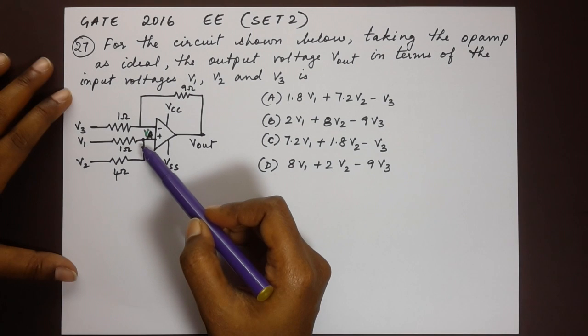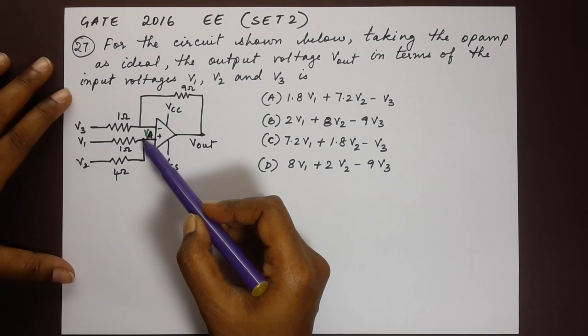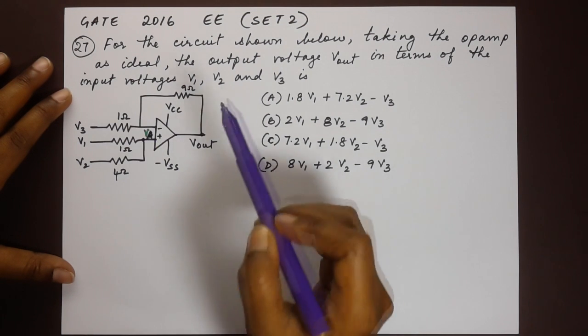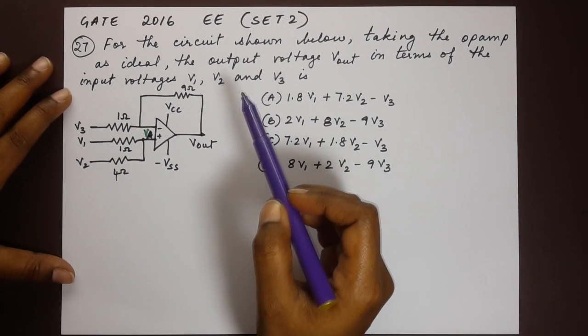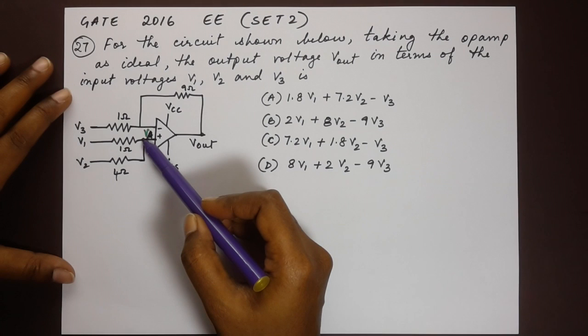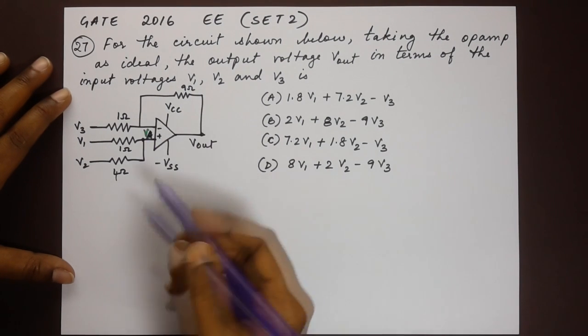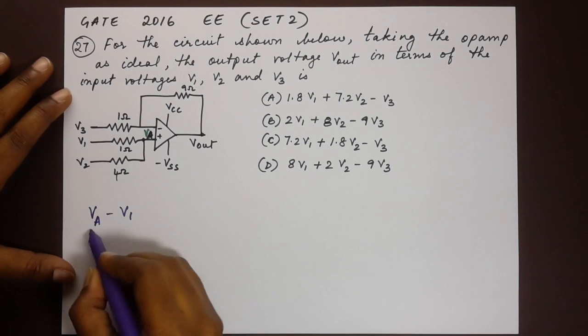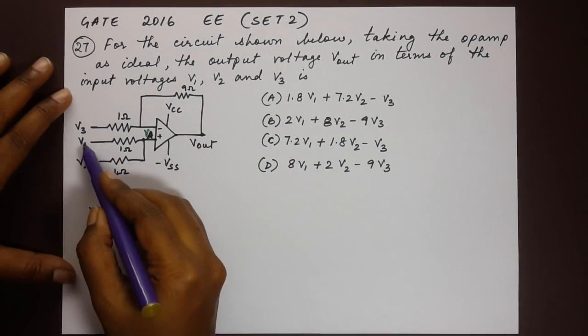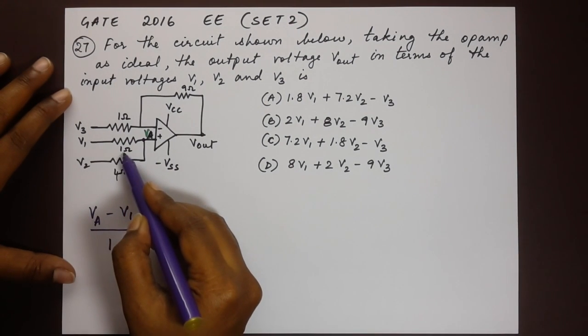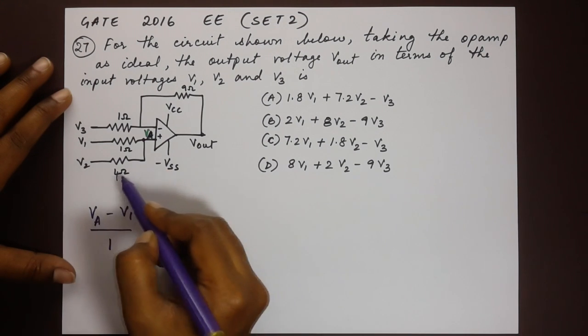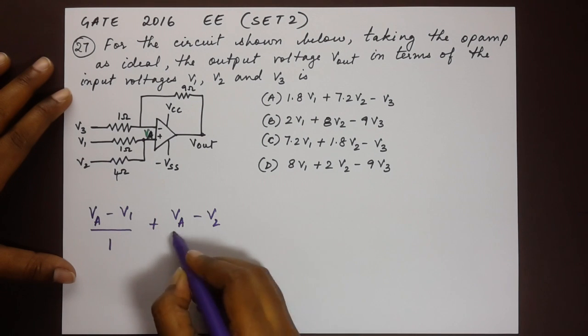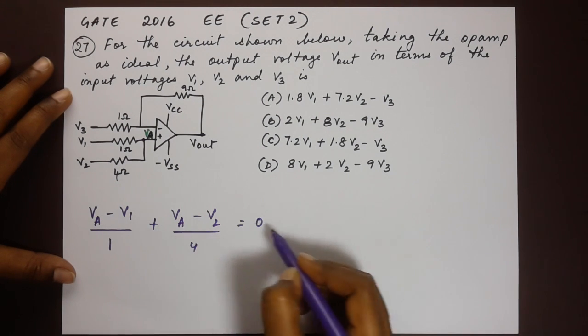In order to write down the different equations, I have taken this point here and named it as Va. The first thing we will do is use KCL and write down the equation at this node. We would have Va minus V1 by 1, and next would be Va minus V2 by 4 plus Va minus V2 by 4 is equal to 0.